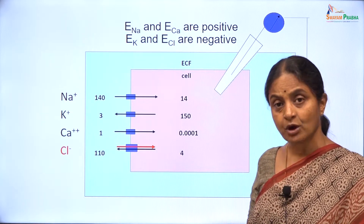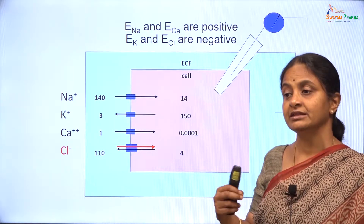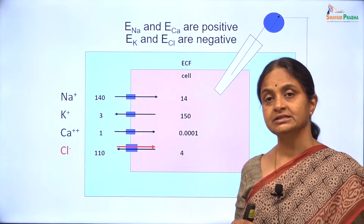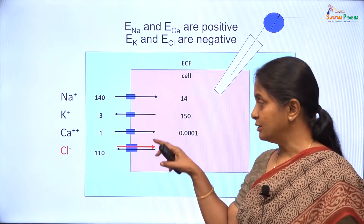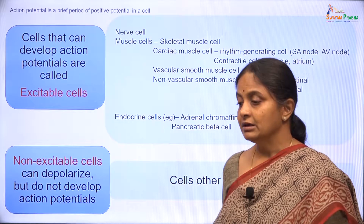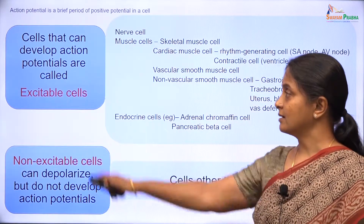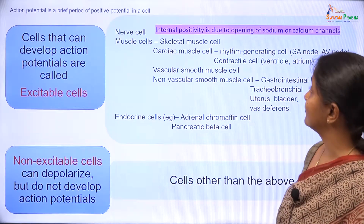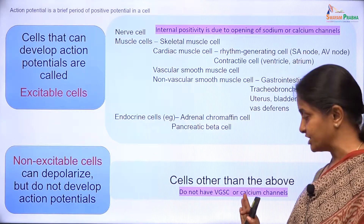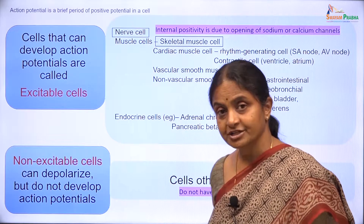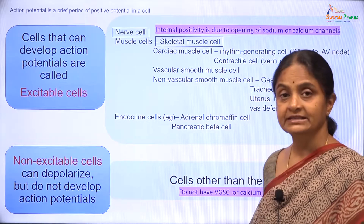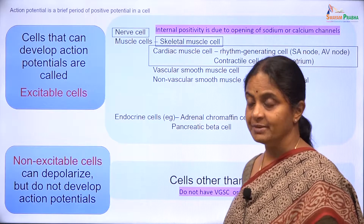In the discussion thus far on action potentials, we have not referred to calcium channels. We have restricted ourselves to considering the upstroke of the action potential as due to voltage gated sodium channels, but that is only in the neuron and skeletal muscle. Dr. Anand Bhaskar, when he considers cardiac muscle action potential, will tell you that they are indeed calcium action potentials. Now, if action potentials are a period of positivity and those cells that can develop action potentials are excitable cells, then it follows that excitable cells should have sodium or calcium channels. By that same logic, non-excitable cells do not have voltage gated sodium channels or calcium channels. The action potential contours we have considered are those of the nerve cell and the skeletal muscle cell. Cardiac muscle action potentials will be dealt with by Anand Bhaskar in the next one or two sessions.